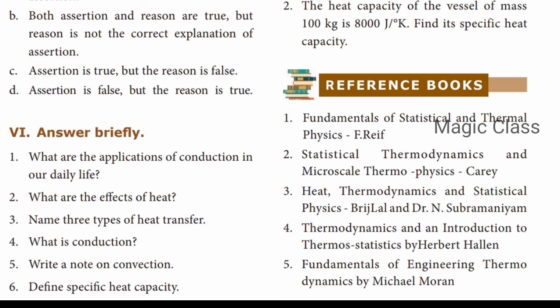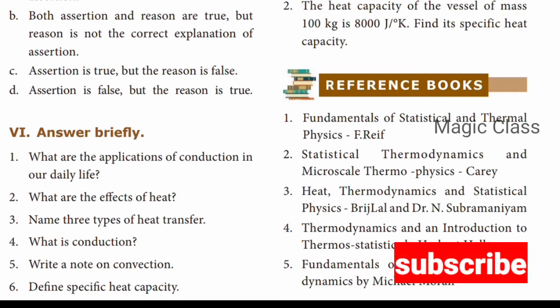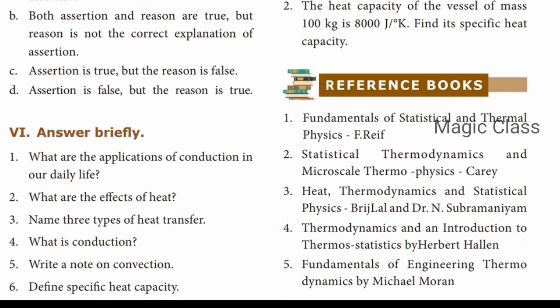Second application: When pressing clothes, the iron box transfers heat to the cloth by conduction. Third: Cooking vessel handles are made of plastic or wood so that heat is not transferred to the hands. Fourth: The temperature inside an igloo is warm because snow is a poor conductor of heat.